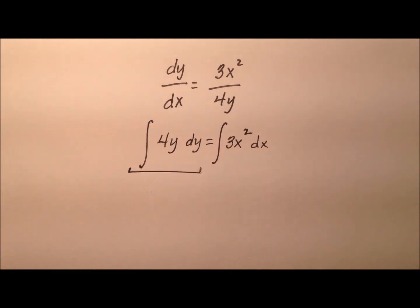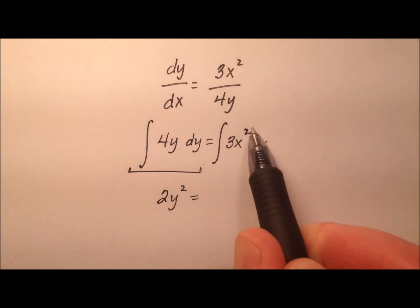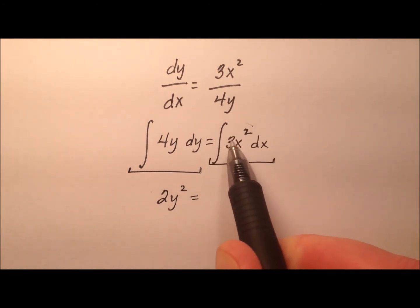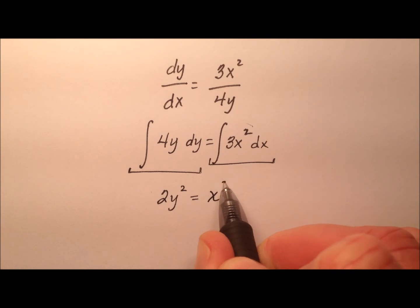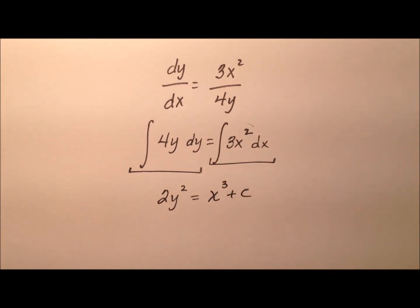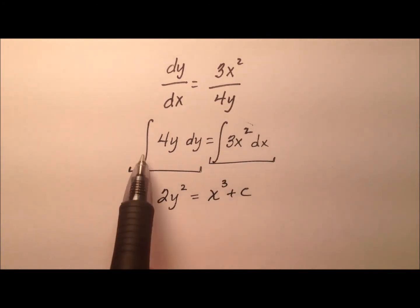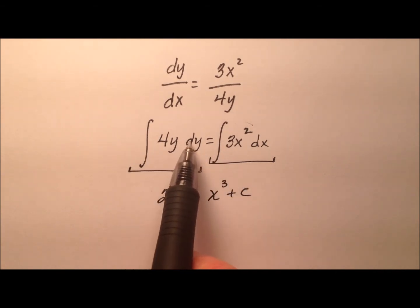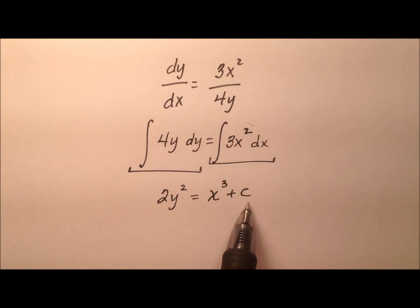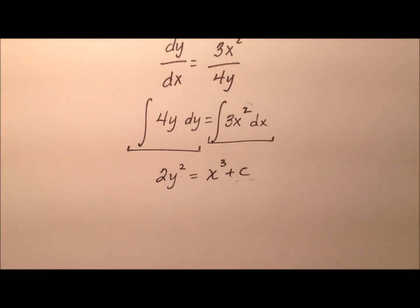So to integrate the left side, I need to find the integral of 4y with respect to y, which is going to be 2y². And then I need to integrate on the right side, 3x², which is just going to be x³ plus c. And usually anytime we integrate, we always put a plus c, but there's no reason to put a plus c on the left and a plus c on the right. So we just kind of sum it up and just put one plus c over here on the right whenever we do this x side.